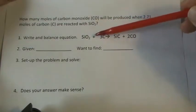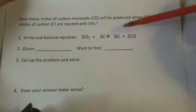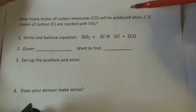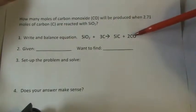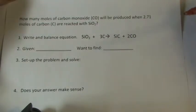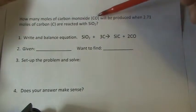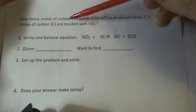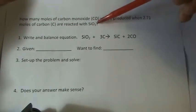One mole of SiO2 plus three moles of carbon yields one mole of SiC plus two moles of CO, carbon monoxide. So they ask us how many moles of carbon monoxide will be produced when 2.71 moles of carbon are reacted with SiO2.